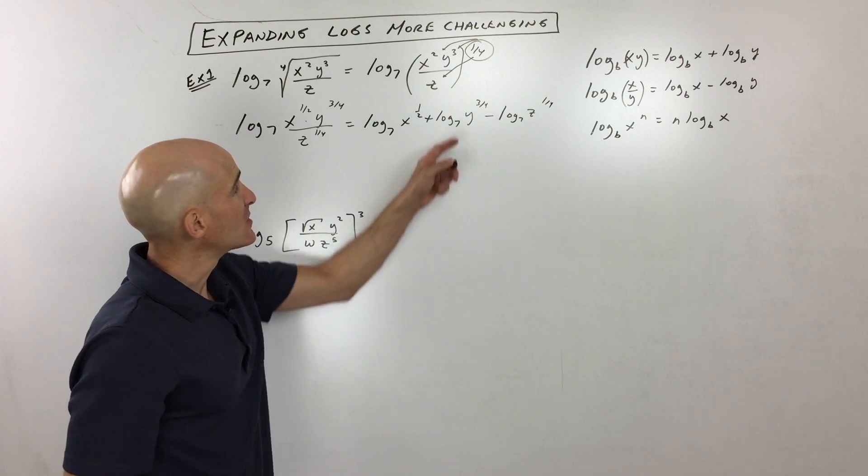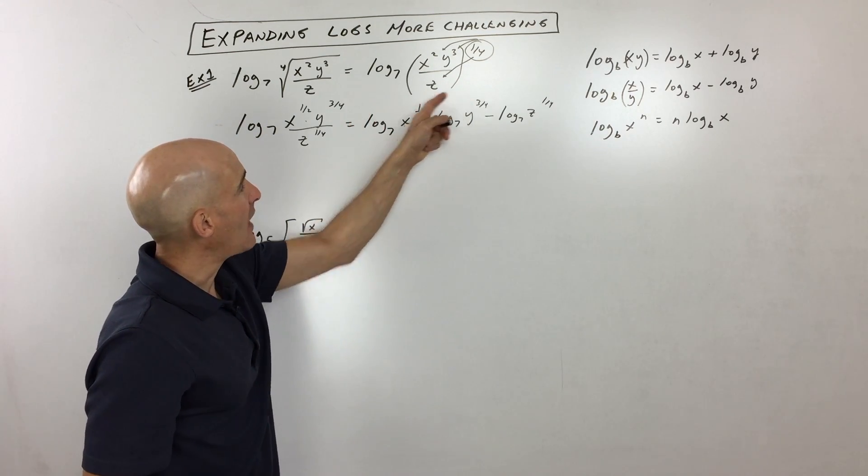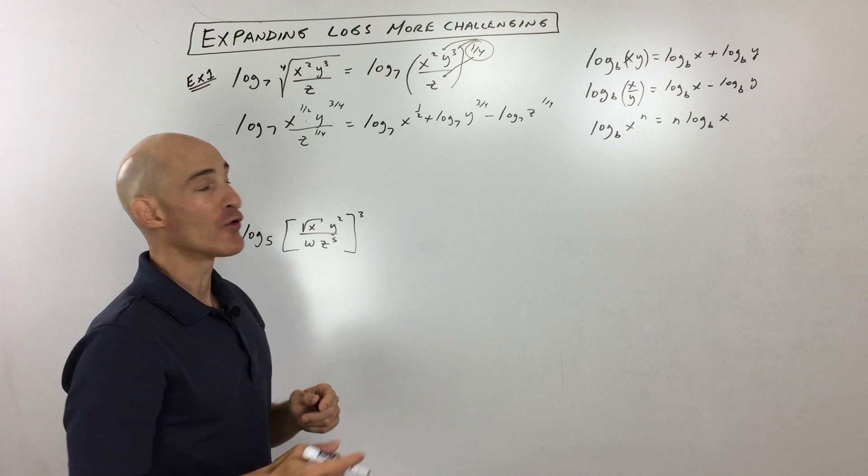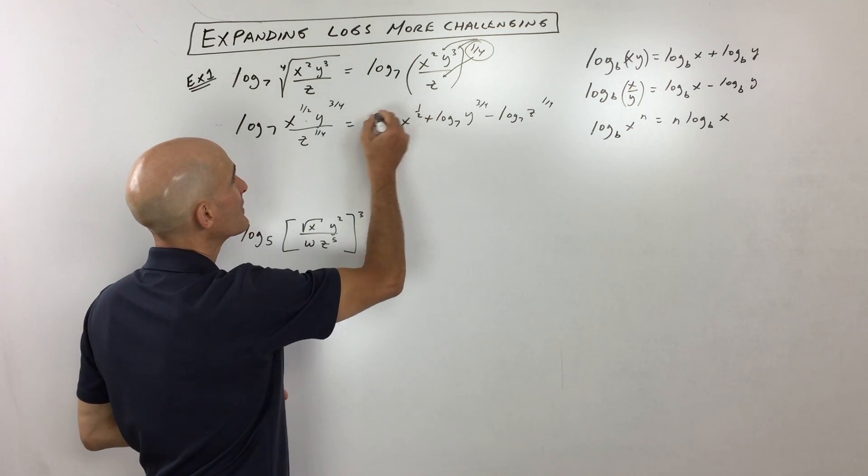Now what we're going to do is we're going to take these powers, we're going to bring them down in front of the logs, as coefficients. That's the power property. We're going to bring that one-half down.